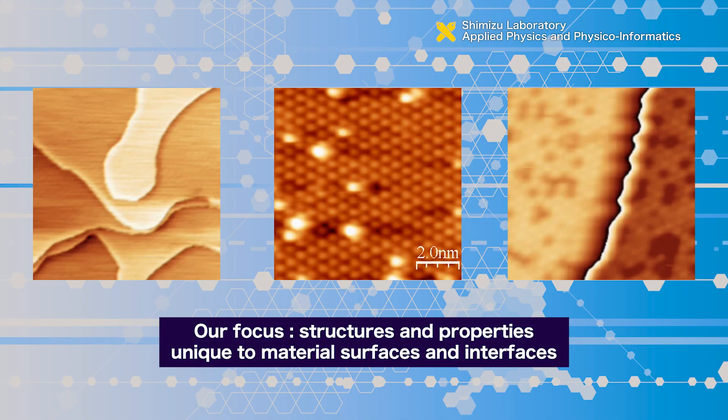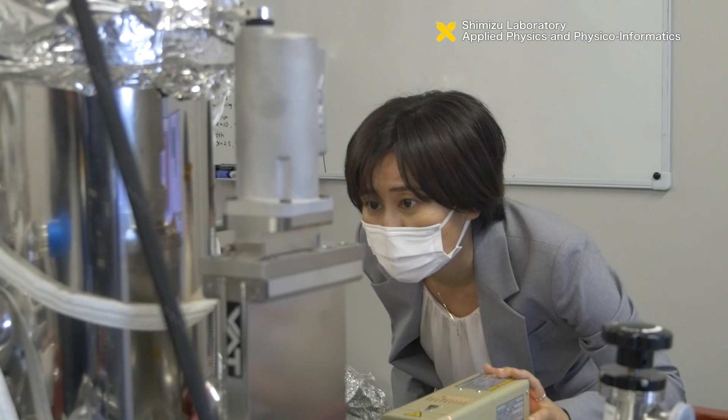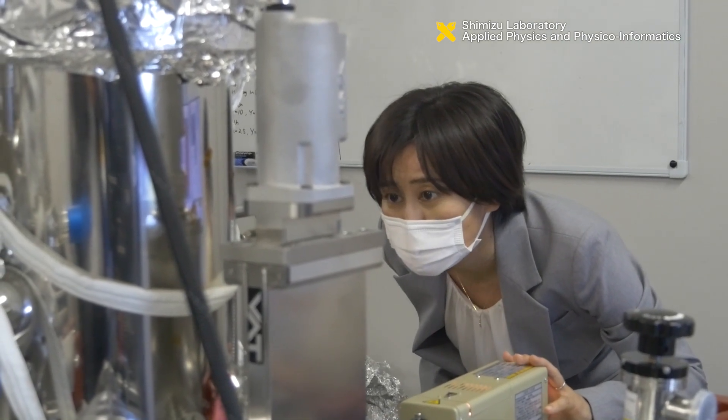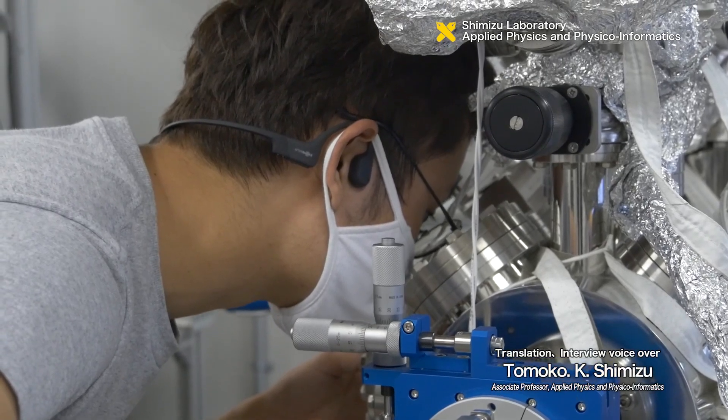Our group focuses on studies of structures and properties that are unique to material surfaces and interfaces. We investigate various types of materials, such as metals, oxides, organic thin films, and adsorbed molecules. We look at material surfaces at the atomic scale and characterize their structures and electronic properties.